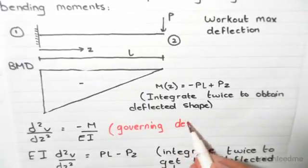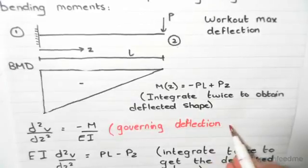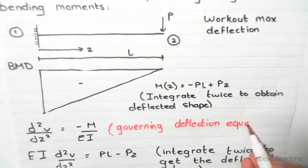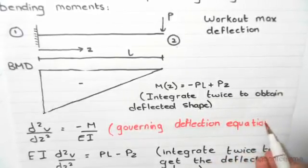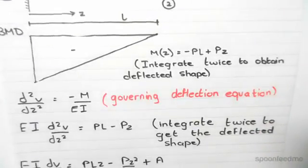As seen many times before. If we substitute M in, we have EI d²v/dz² = PL - Pz.